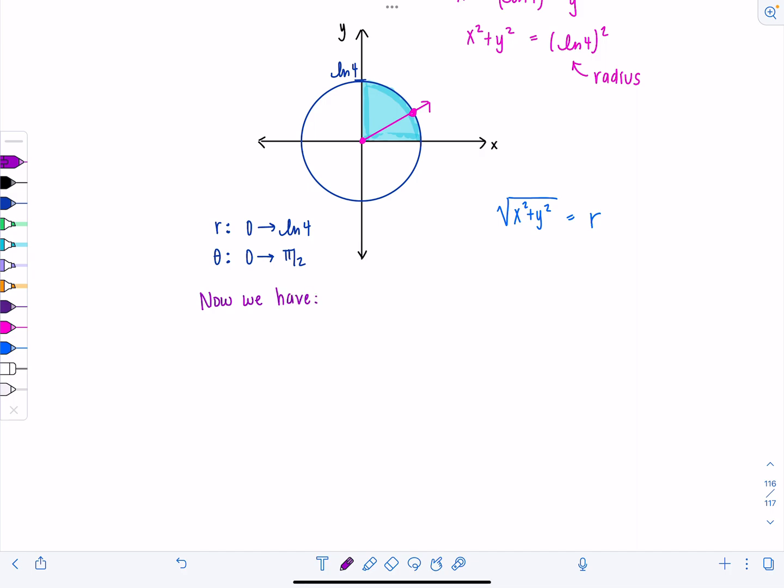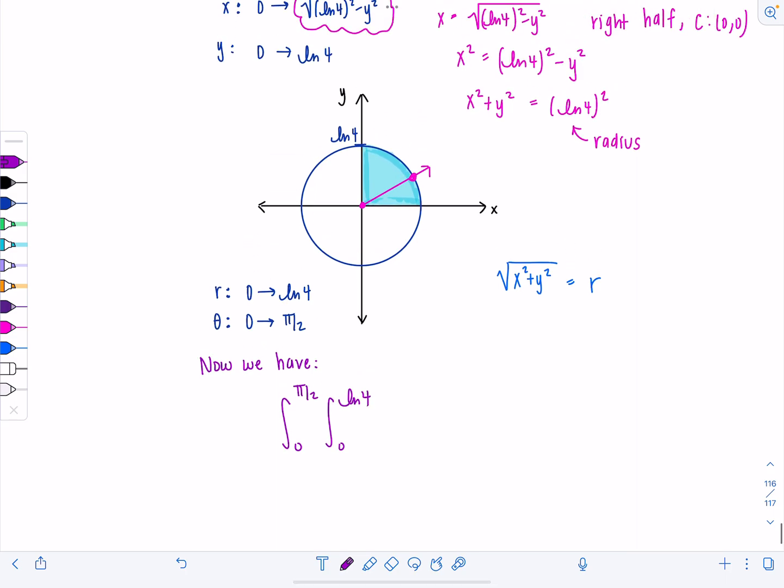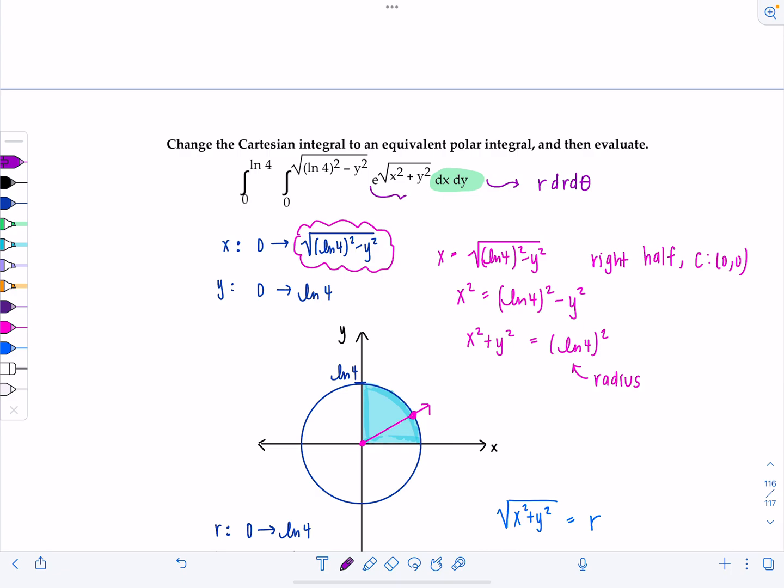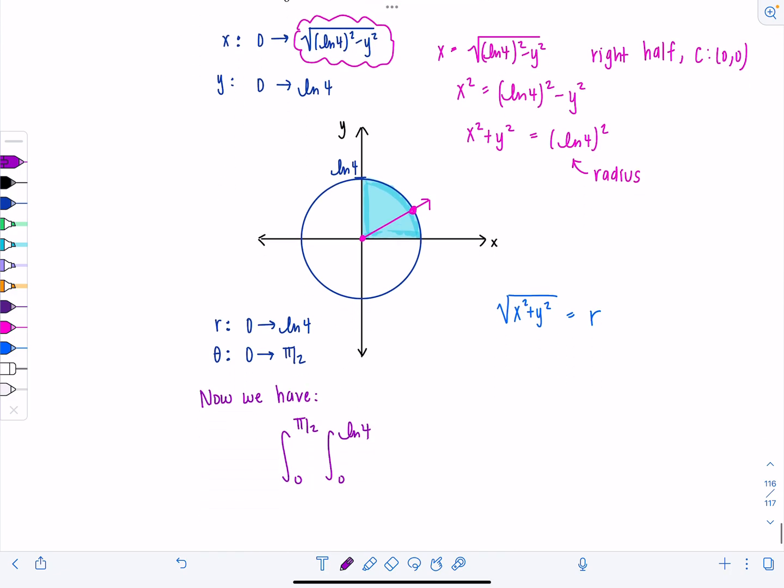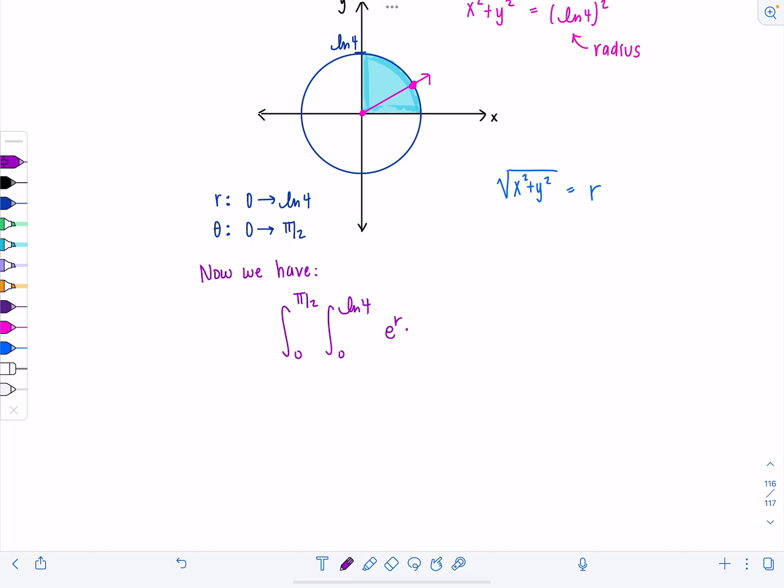So now we have the following integral. It goes from 0 to pi over 2. Those are the limits for theta. 0 to natural log of 4. And then I have e to the r times r dr d theta.